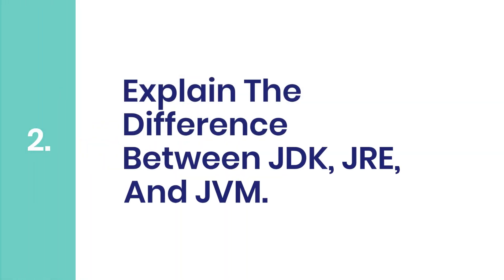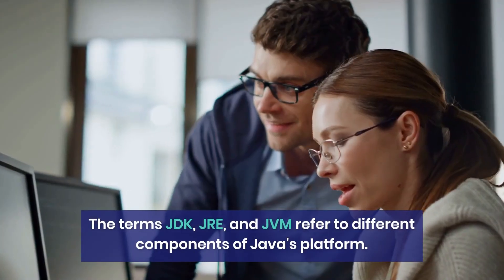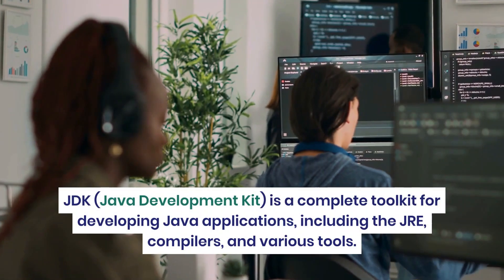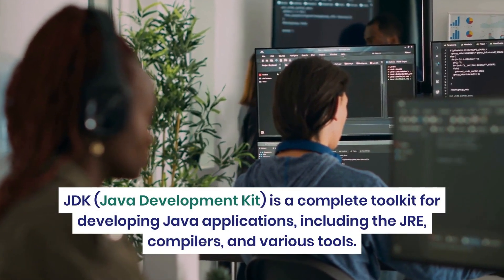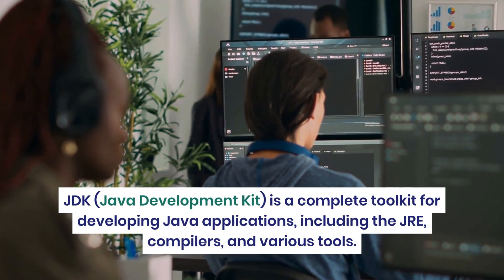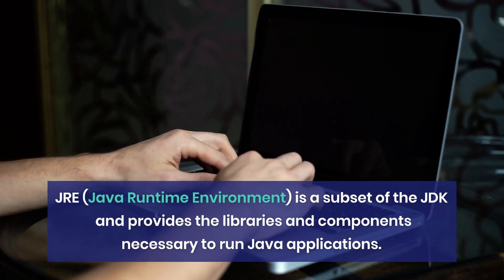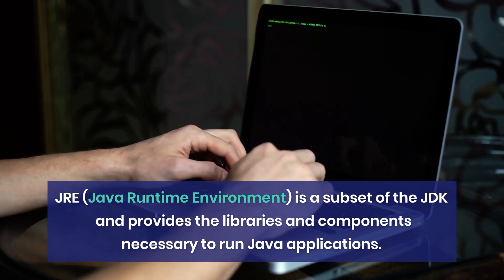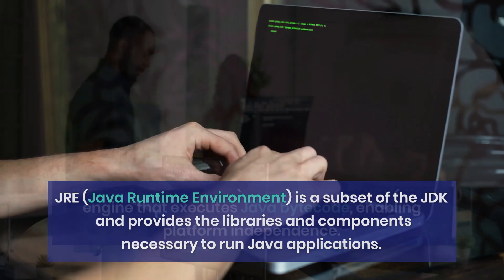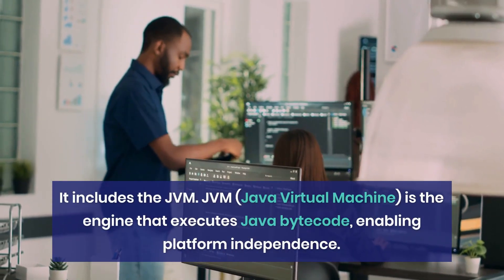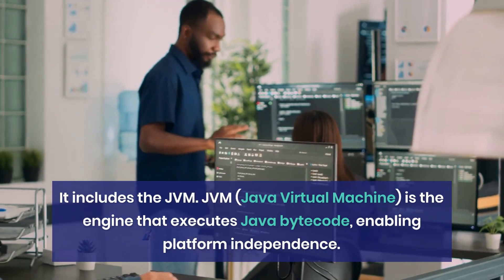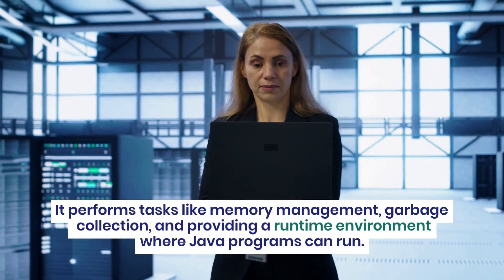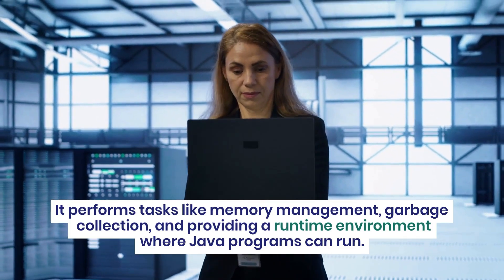Question 2: Explain the difference between JDK, JRE, and JVM. The terms JDK, JRE, and JVM refer to different components of Java's platform. JDK, Java Development Kit, is a complete toolkit for developing Java applications, including the JRE, compilers, and various tools. JRE, Java Runtime Environment, is a subset of the JDK and provides the libraries and components necessary to run Java applications. It includes the JVM. JVM, Java Virtual Machine, is the engine that executes Java bytecode, enabling platform independence. It performs tasks like memory management, garbage collection, and providing a runtime environment where Java programs can run.